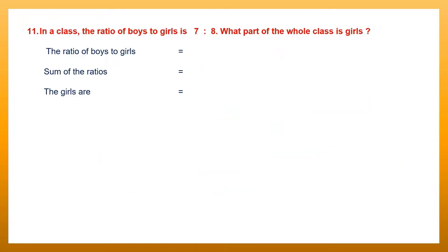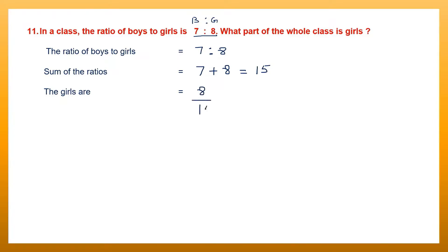Question 11. In a class, the ratio of boys to girls is 7 is to 8. What part of the whole class is girls? The sum of the ratios is 7 plus 8 equals 15. So 7 parts are for boys and 8 parts are for girls. Therefore the girls form 8 fifteenths of the whole class.